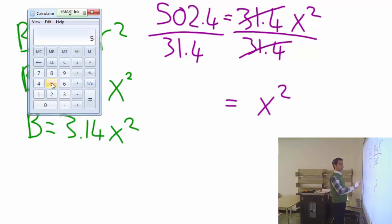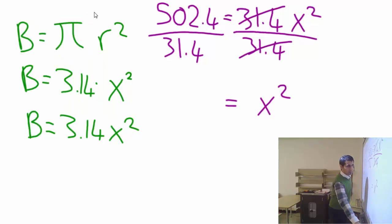What I will have here is only x squared. And let's have the division and let's see what we will get from the division. 502.4 divided by 31.4, and I'm going to get 16. Cool.